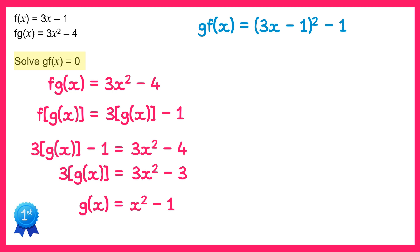We've been asked to solve gf of x equals 0, so we'll just set this equal to 0, and then we just need to solve. Now if you want to you can expand the brackets and go for a solution that way, but you could also just add 1 to both sides, so that will give you 3x minus 1 squared equals 1.